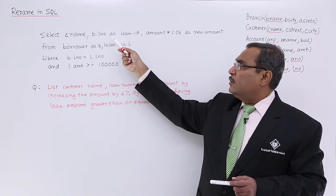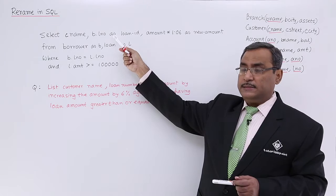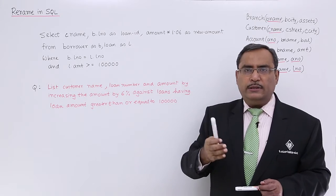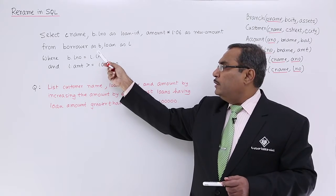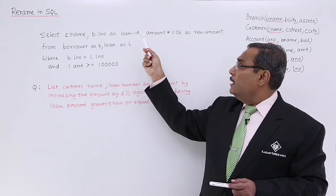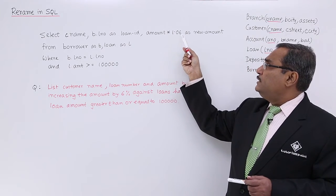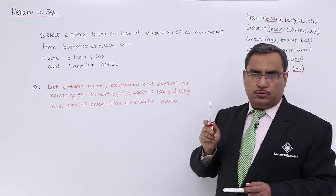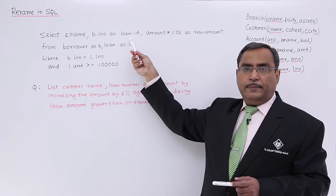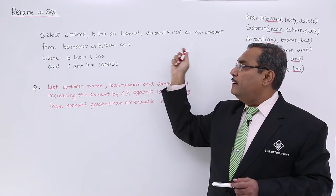You see here also another rename operation is taking place. What are we doing the renaming here? We are doing the domain renaming. We are doing the attribute renaming. What we are doing the renaming here? We are doing the tuple renaming. Amount into 1.06 as new amount. New amount heading will come. This loan ID will be coming because they have got renamed in the output.